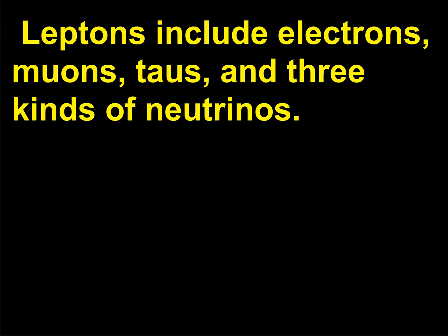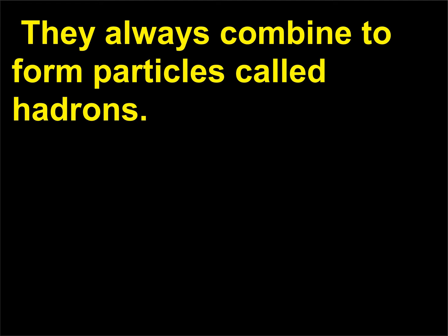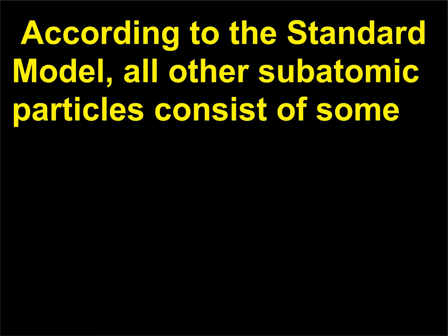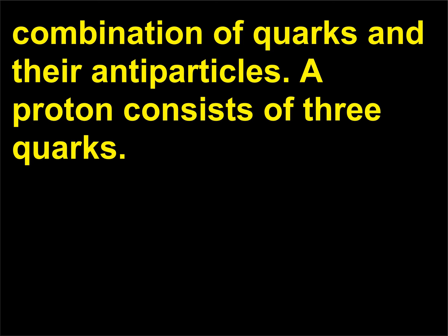Leptons include electrons, muons, taus, and three kinds of neutrinos. Quarks never occur alone in nature; they always combine to form particles called hadrons. According to the standard model, all other subatomic particles consist of some combination of quarks and their antiparticles. A proton consists of three quarks.